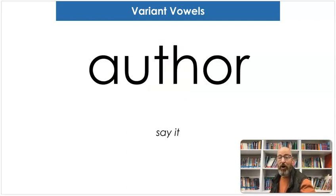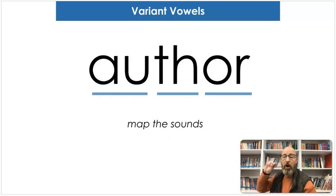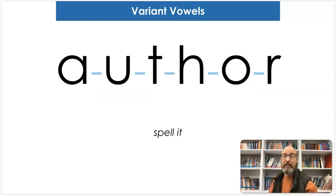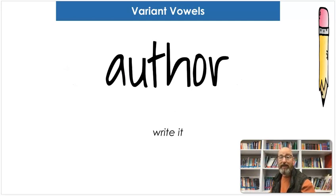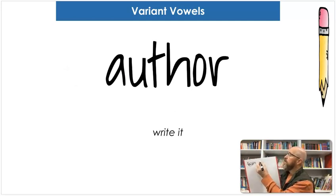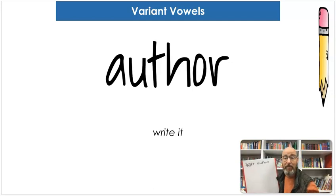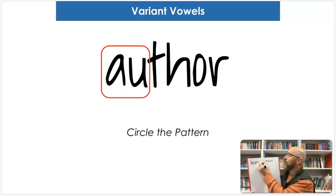Our next word is author. Say author. Map the sounds: aw, th, or. Author. Spell it: A-U-T-H-O-R. Author. And let's write it: A-U-T-H-O-R. And what makes the "aw" sound? A-U. That's correct. Let's circle it.